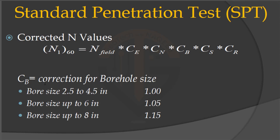The borehole correction Cb can be applied as follows: if the borehole size is between 2.5 to 4.5 inches, a correction of 1.0 is applied — meaning no correction is required. If the borehole size is between 4.5 to 6 inches, a correction of 1.05 is applied, because a larger borehole causes the recorded SPT-N value to be less than the actual value. If the borehole size is up to 18 inches, a correction factor of 1.15 is applied to obtain the corrected N value.